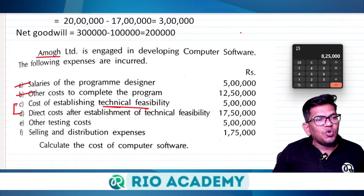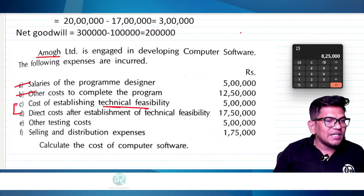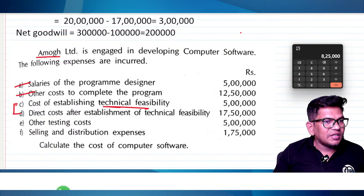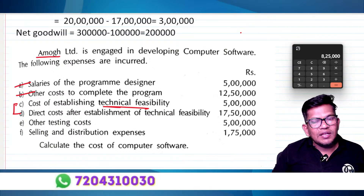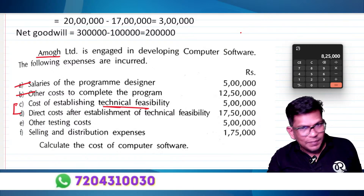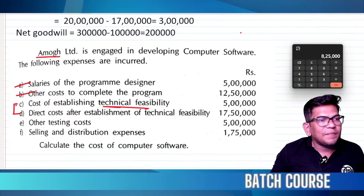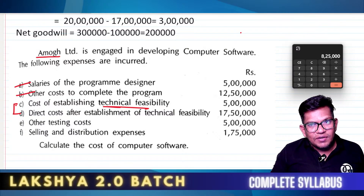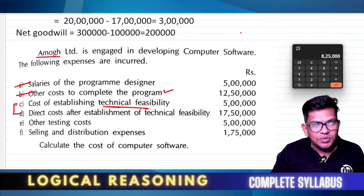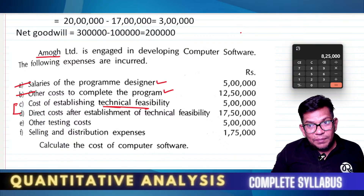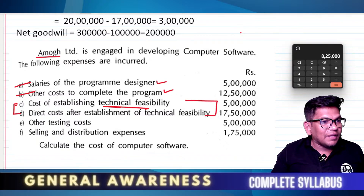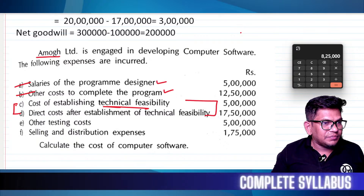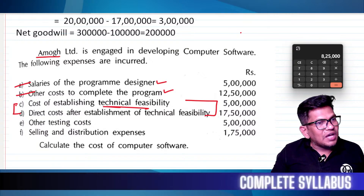What is the question? You don't have to pay for research and development expenses. Cost incurred for completing software — that is R&D. Establishing technical feasibility — that is also R&D. Other testing expenses — R&D. Selling expenses are selling expenses, not R&D.